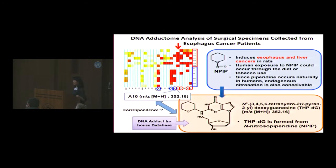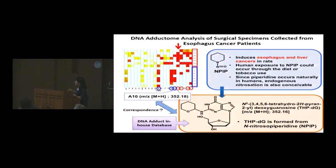This is a heat map of the adductomics data, and again you can see clear separation between the high-risk and low-risk areas for each DNA adduct. Among these DNA adducts, we first focused on one named ATEM with an m/z value of 352.18.